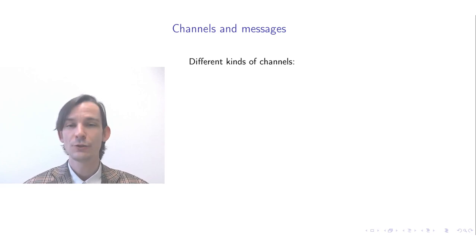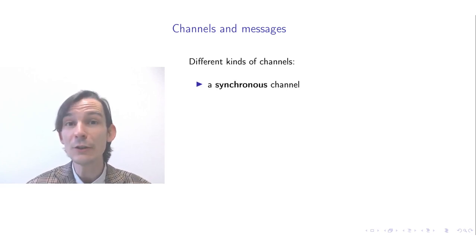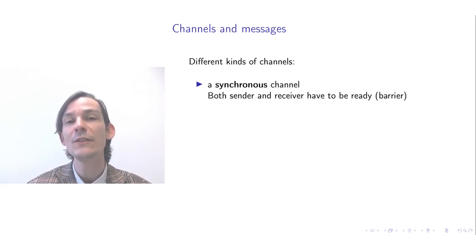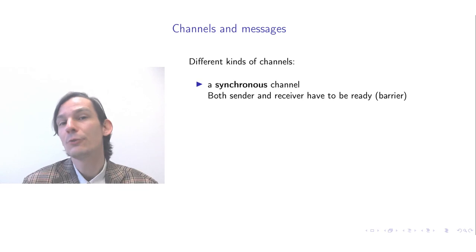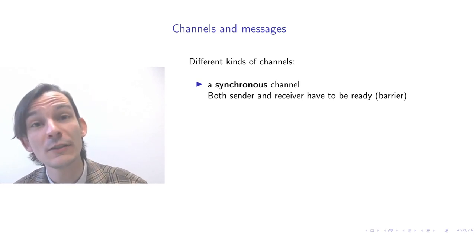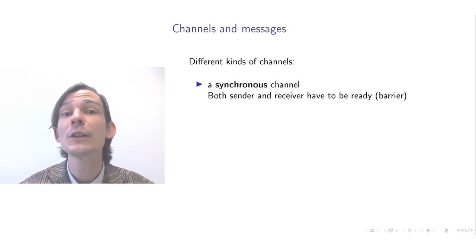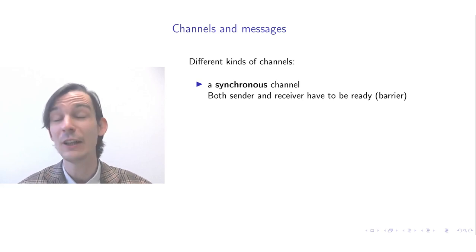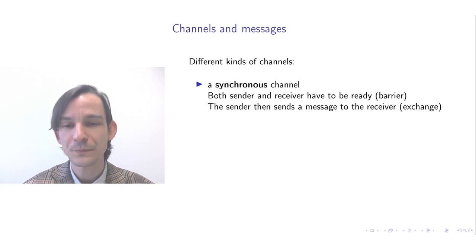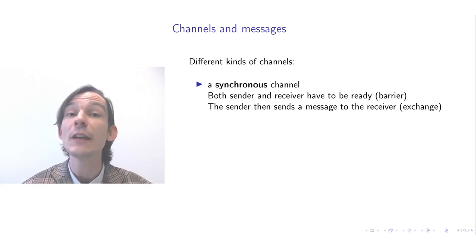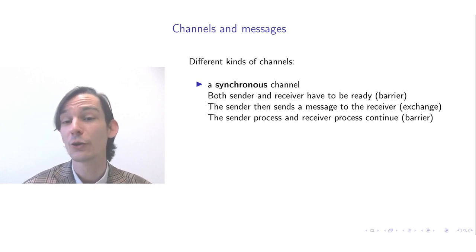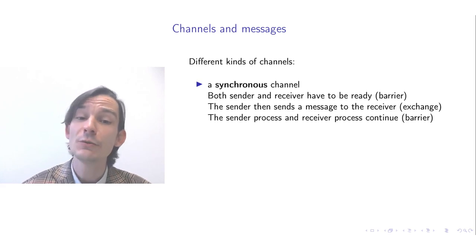There are different kinds of channels. Let's consider the synchronous channel. By that, I mean that both the sender and the receiver process have to be ready to interact with the channel. You could think of this as a local barrier in which the sending process and the receiving process both wait on each other. Whenever both are ready, they can exchange a message — the sender sends to the receiver — and then both the sender and receiver can continue.